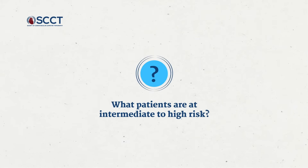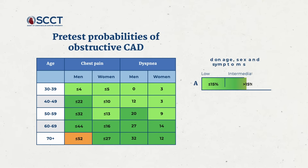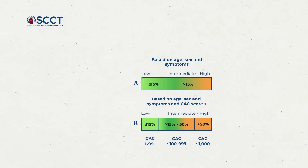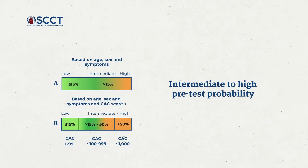What patients are at intermediate to high risk? The guideline provides a table to determine the pretest probability of having obstructive CAD based on age and symptoms. Most men over the age of 40 and many women over the age of 50 to 60 would have an intermediate to high pretest probability, which is defined as greater than 15%. The other option in the guideline is to incorporate information about the presence of coronary artery calcium — this may be known from prior chest CTs. If patients have coronary calcifications, they will have a greater than 15% pretest probability of having obstructive CAD, and would be classified as intermediate to high pretest probability.